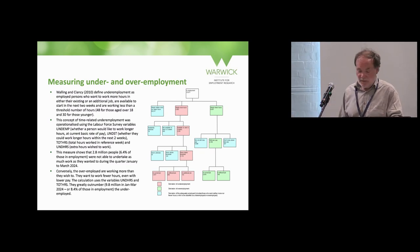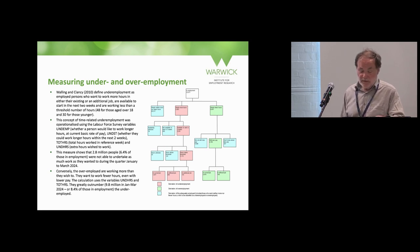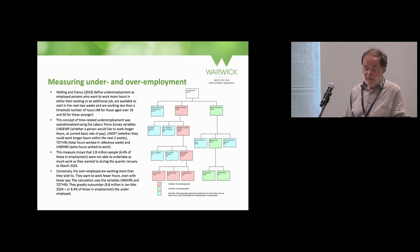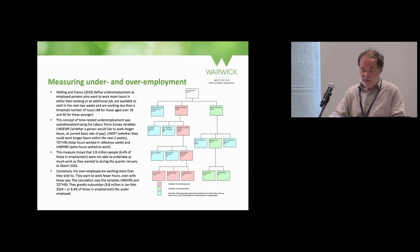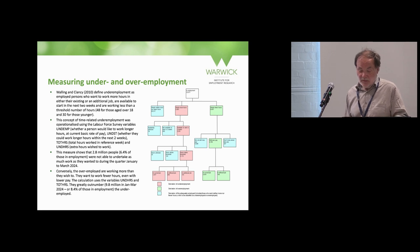This slide demonstrates — you won't be able to read it — but the diagram on the right comes from the M16 publication, giving the numbers of people in each component of the calculation. The paper was written by Walling and Clancy in Labour Market Trends, defining underemployed as people who want to work more hours in either existing or an additional job, are available to start in the next two weeks, and are working less than a threshold number of hours — 48 for those aged over 18 and 30 for those under 18. The variables used to operationalise this were UNDEMP, UNDST, TOT hours and UND hours.